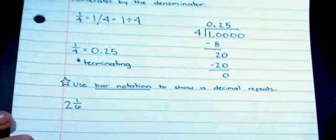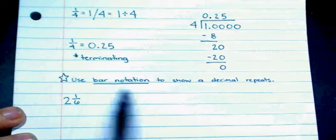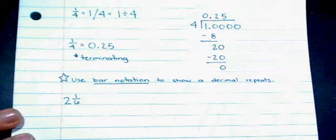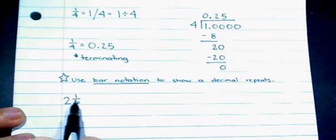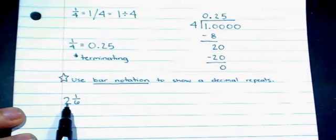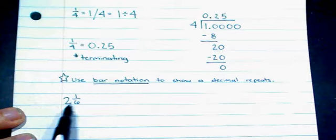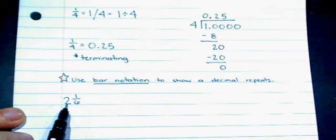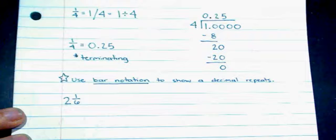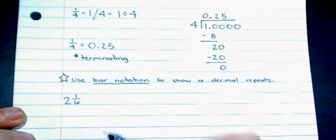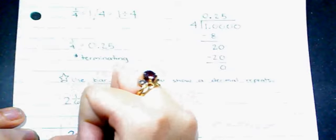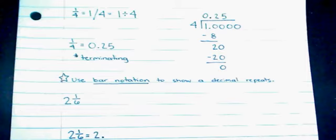If you end up with a decimal that does not terminate, we will use bar notation to indicate that the decimal is repeating. For the next example, I have the mixed number 2 and 1 sixth. The whole number is just going to stay a whole number in my answer — it means 2 plus a little bit extra, so as a decimal it's still 2 point something, whatever 1 sixth equals as a decimal. I just need to figure out what 1 sixth is.